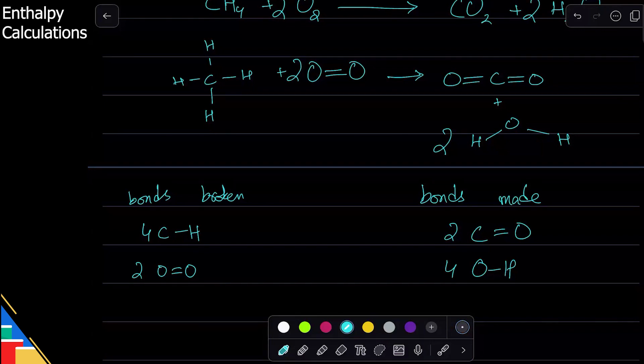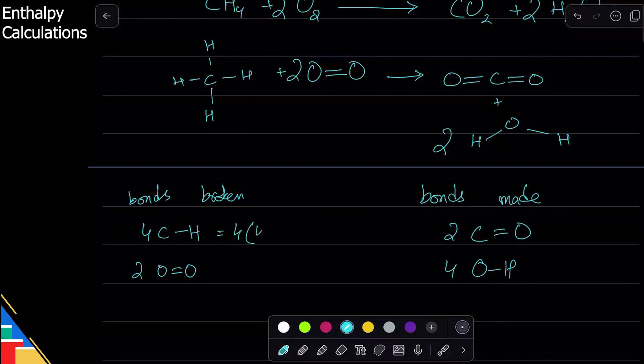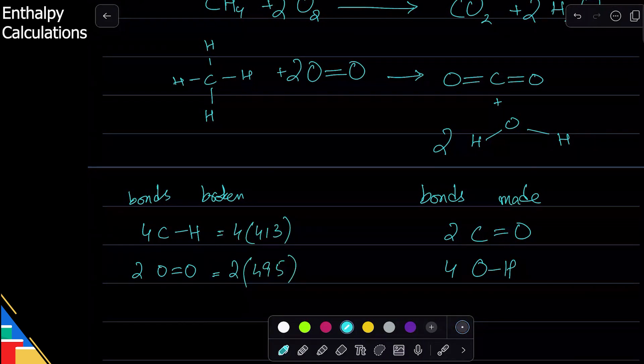Now I will simply get the values which are given. Four of these have energy of 4 times 413. Two of these have the energy of oxygen-oxygen double bond, which is 495. Similarly, carbon-oxygen double bond, that is 2 times 1072. And oxygen-hydrogen single bond, that is 463.